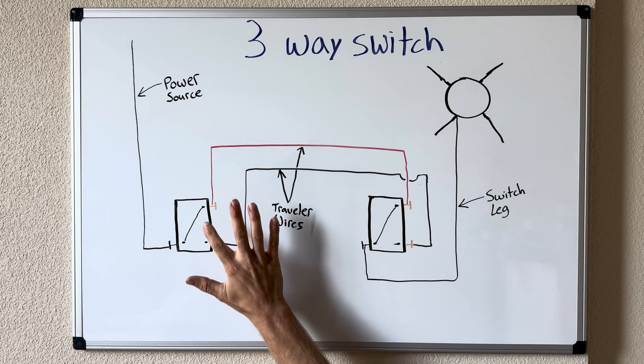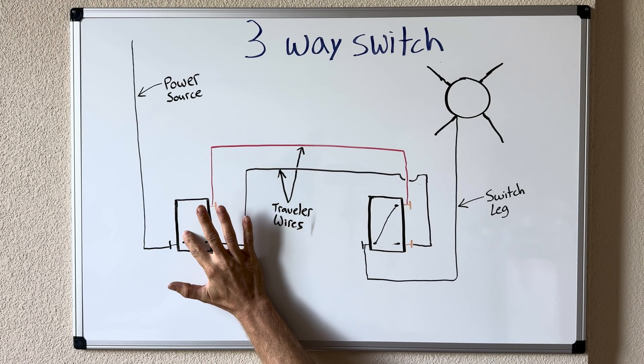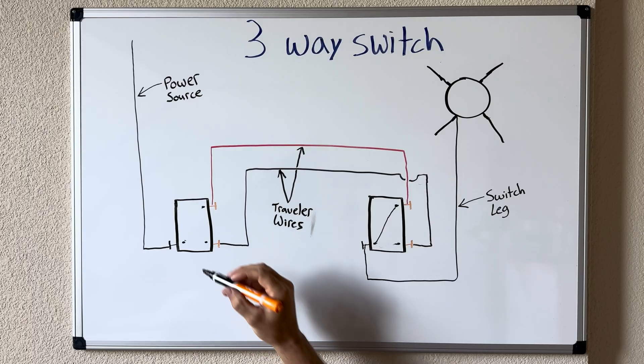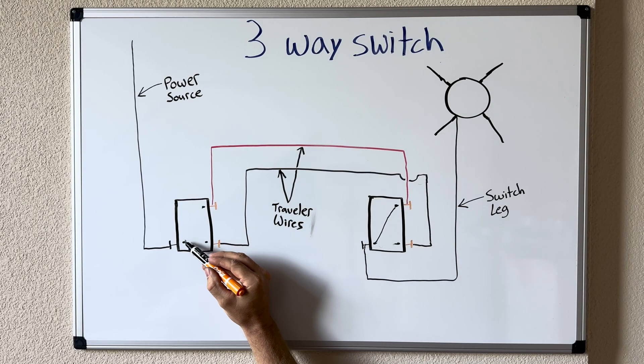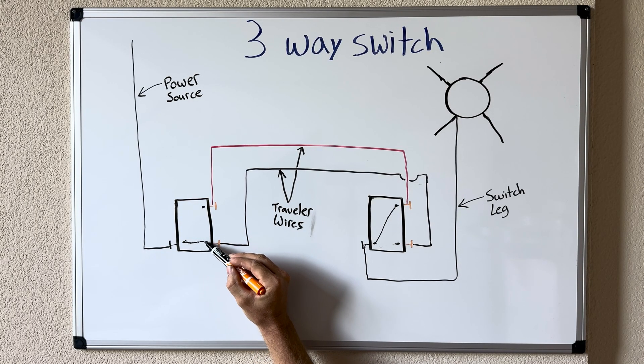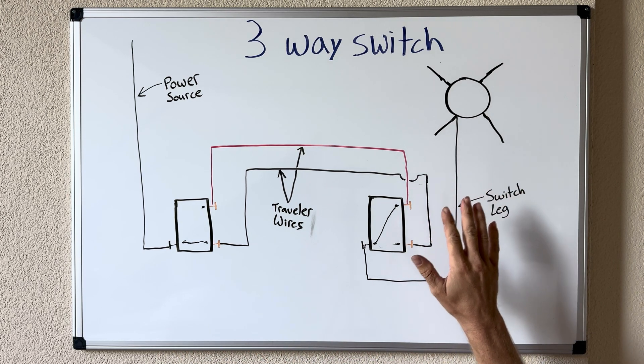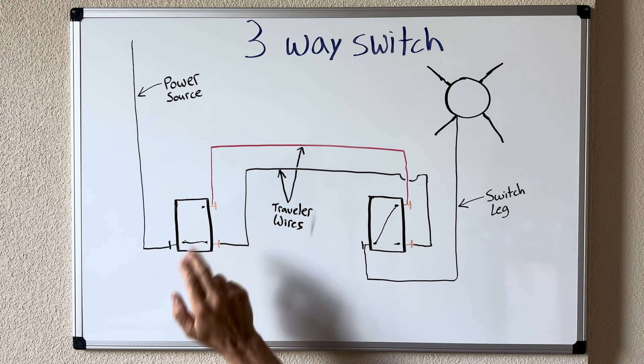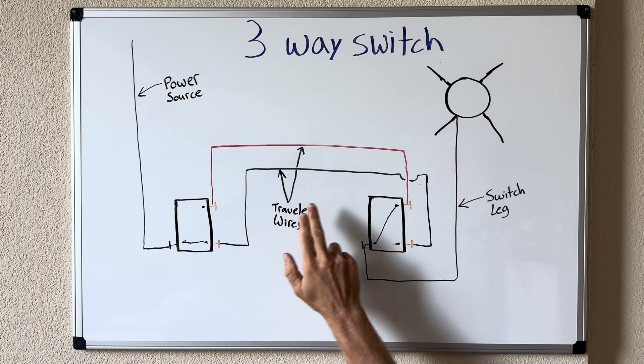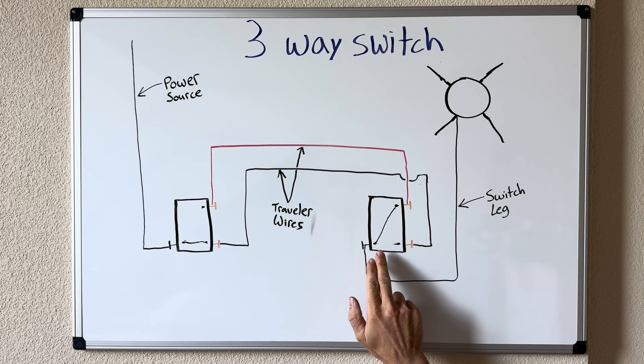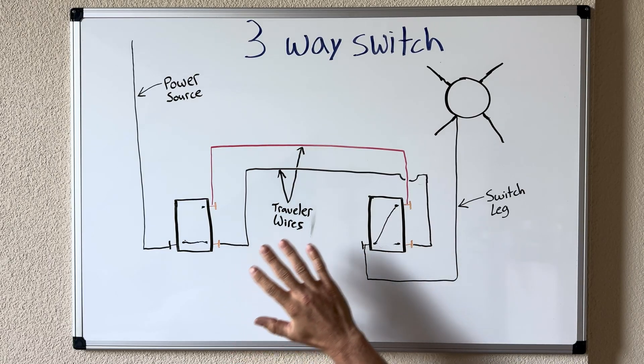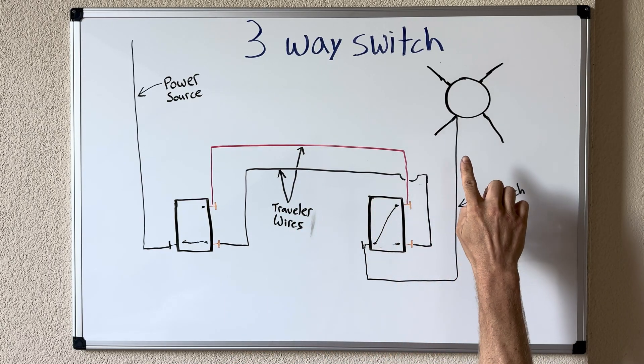Now let's change this switch position. We're gonna switch it to be engaged on the black traveler wire and now what we've done is we've broken the flow of power going to our light because we changed it from our red traveler to our black traveler all the way over to our next switch and here it is not engaged. So there's no way for the power to get through our switches and to our light.